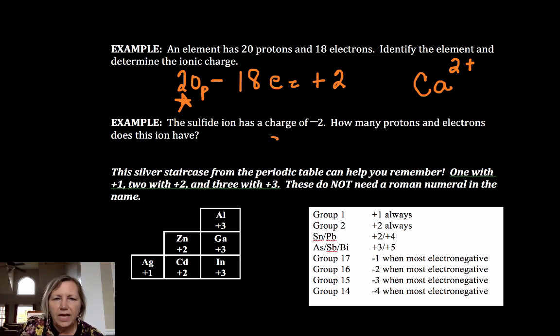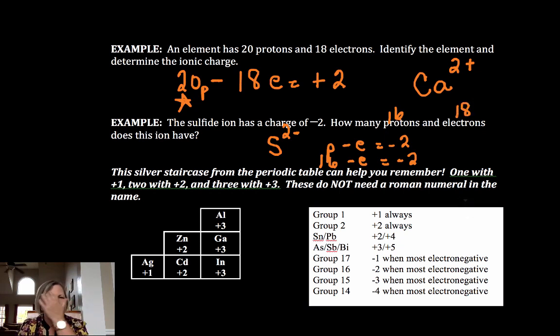So sulfide ion has a charge of negative 2. We put sulfur to negative. So that means protons minus electrons is equal to a negative 2. Well if you look up sulfur it's element 16. So 16 minus electrons is a negative 2. So it has 16 protons and it has 18 electrons. So that's how you kind of do the logic to figure out the charges and protons and particles.